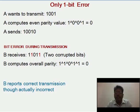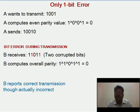Parity bit detection can be extended for an odd number of errors, but it cannot detect two errors. For example, A wants to transmit 1001, computes even parity, and sends the message 10010. Assume a bit error occurs and B receives 11011 — here there are two corrupted bits, but B computes the overall parity and the result is 0. Therefore B reports correct transmission though it is actually incorrect, demonstrating that the parity bit mechanism cannot detect two errors.